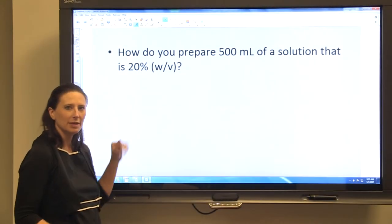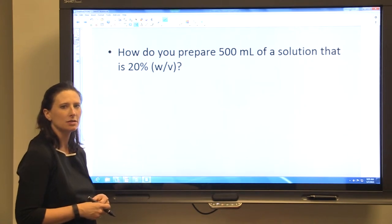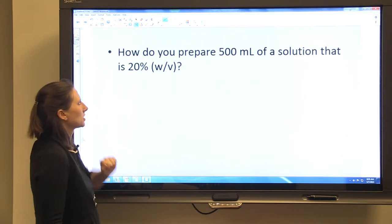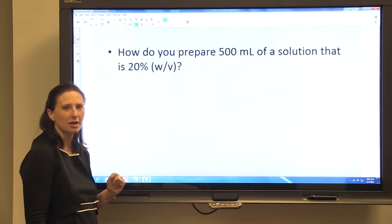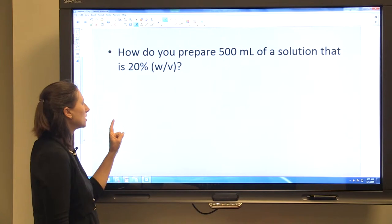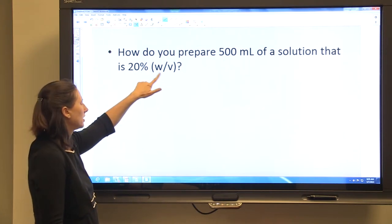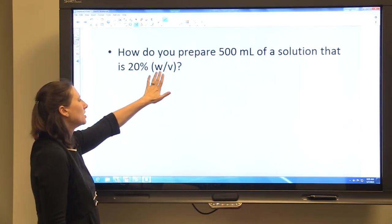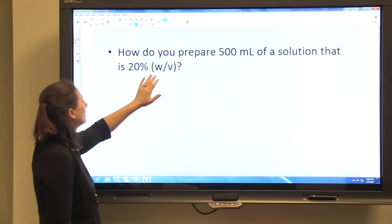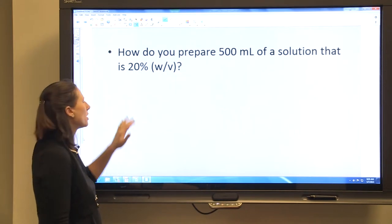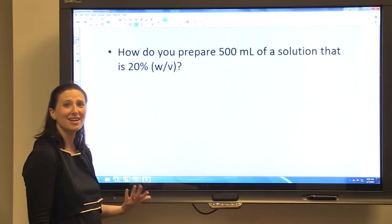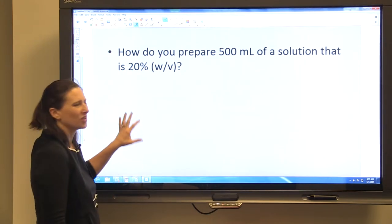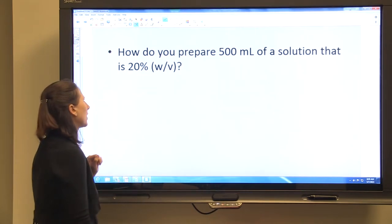So it's a little bit different if you're preparing a solution with a solid or something that you have to weigh out. This question asks how you would prepare 500 mLs of a solution that is 20% weight to volume. Your clue that you need to weigh something out is here in this weight to volume. So you'll know that you're dealing with a solid and not necessarily a liquid. You can really approach this one of two ways.